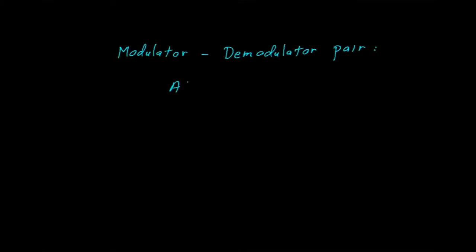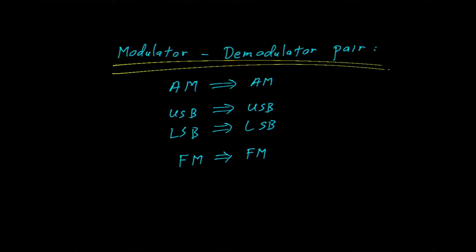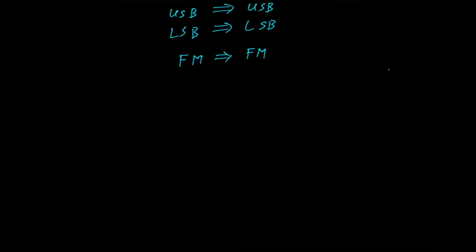With all this discussion about modulators, it's important to realize that the modulator and demodulator must be matched. An AM transmitter will be received by an AM receiver. The upper sideband signal must be demodulated with an upper sideband receiver, and the same goes for lower sideband. That also applies to things like frequency modulation, which we'll talk about next time we meet. We see this modulator-demodulator pairing when we sketch our model of the communication system.